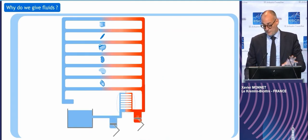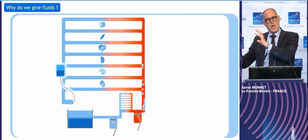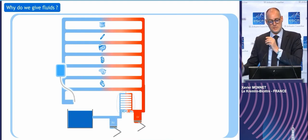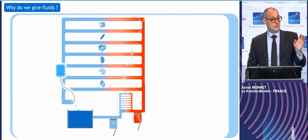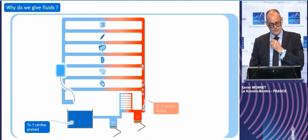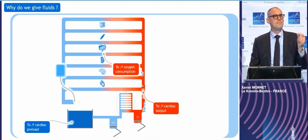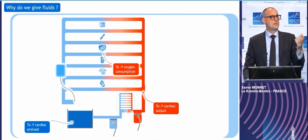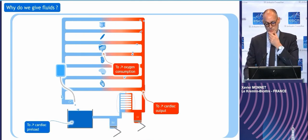What's good in this way of schematizing the cardiovascular circuit is to emphasize this large reservoir, which is in fact the venous system. When you infuse fluid to a patient, it's basically for increasing cardiac preload — you expect that cardiac output will increase, and that eventually oxygen consumption will improve. So the right assessment of the effects of fluid should include the assessment of preload, cardiac output, and tissue oxygenation.